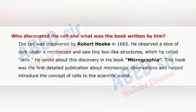The cell was discovered by Robert Hooke in 1665. He observed a slice of cork under a microscope and saw tiny box-like structures, which he called cells. He wrote about this discovery in his book Micrographia. This book was the first detailed publication about microscopic observations and helped introduce the concept of cells to the scientific world.